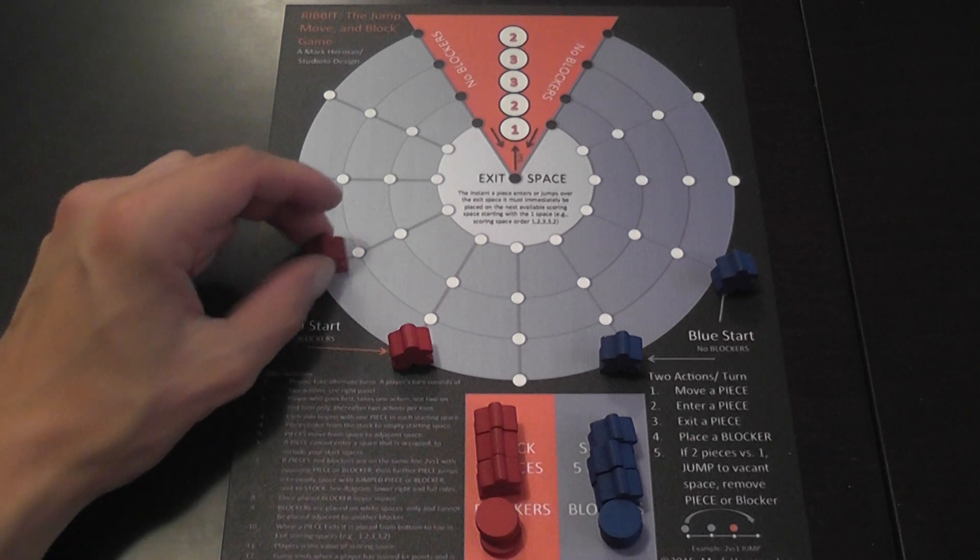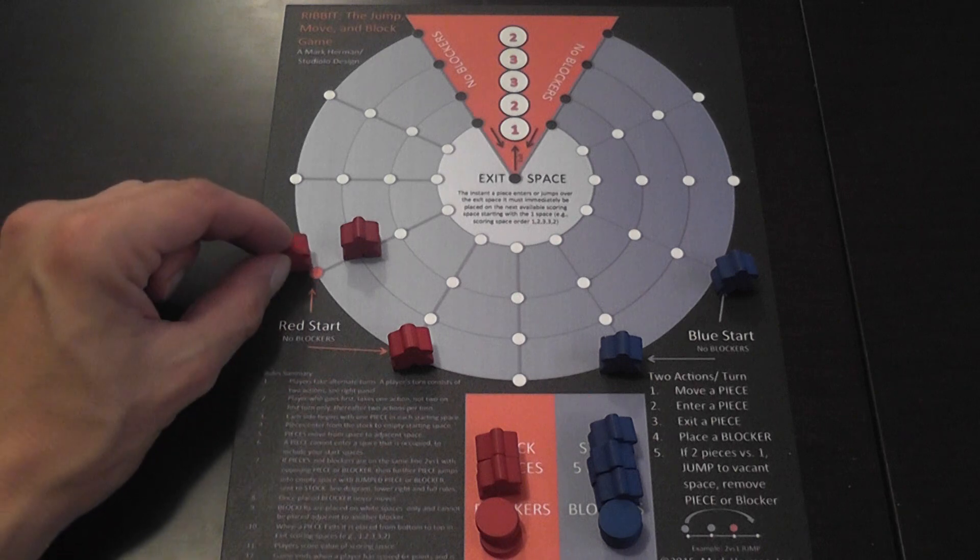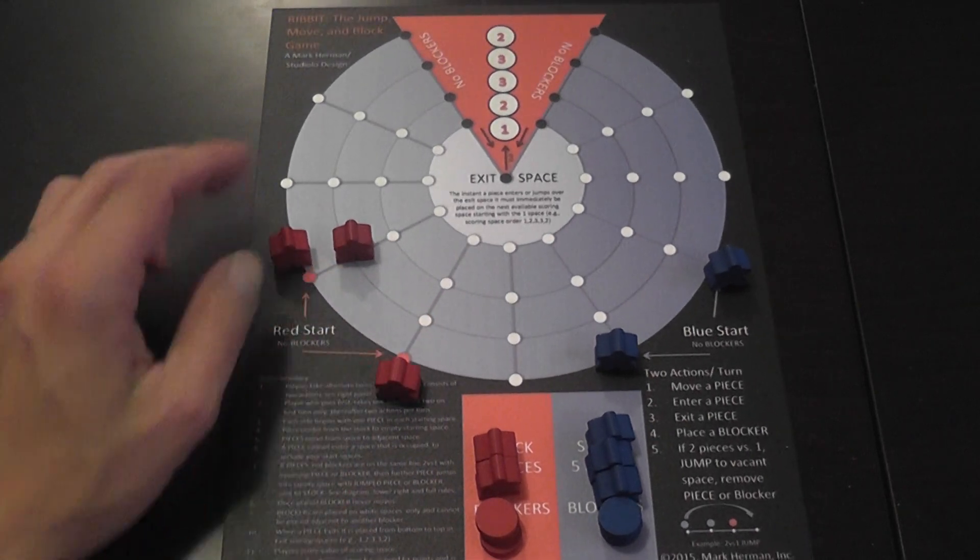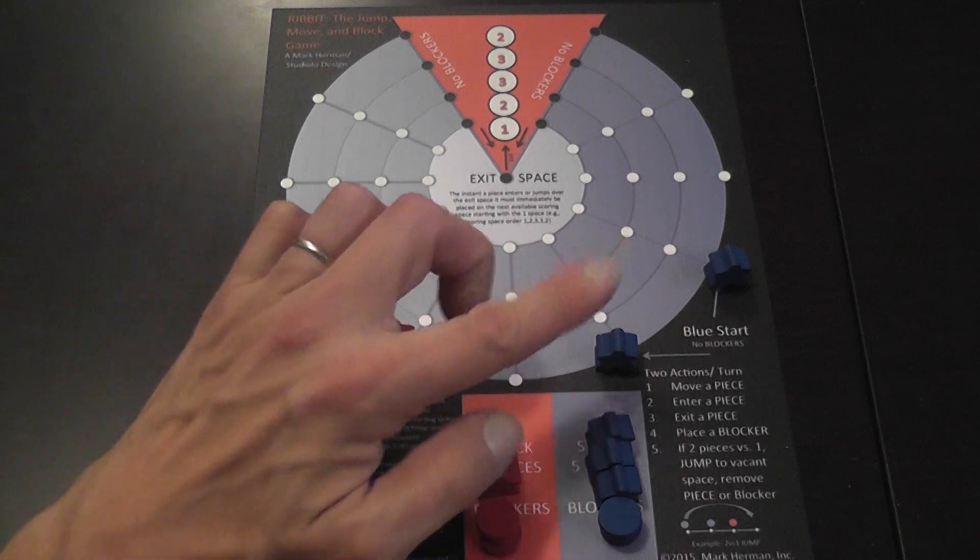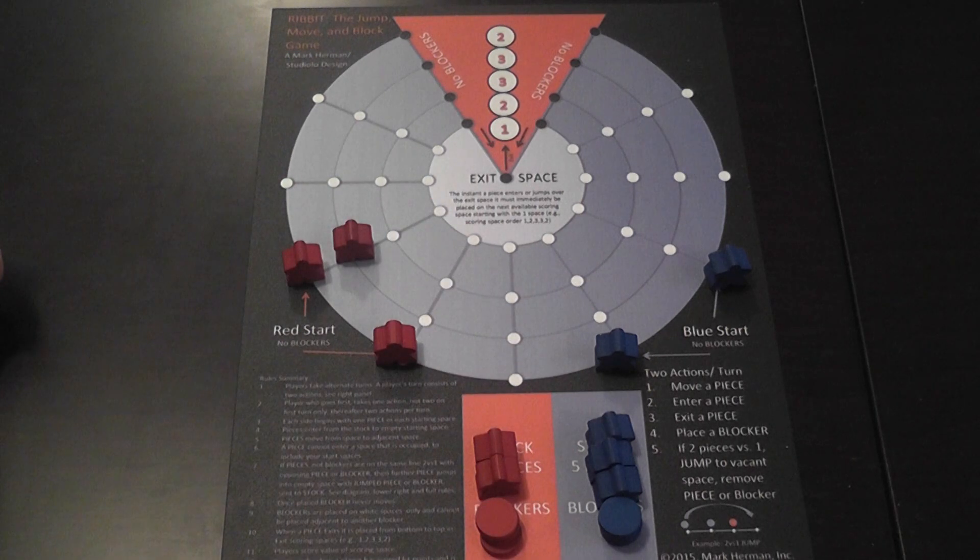And or you can spend one of the actions to enter a piece. So you move a piece from your stock to one of the two colored dots that represent your entry areas. Each player also has two entry areas. So I can spend an action to do that, to enter a piece.